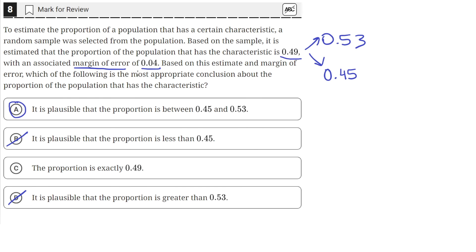It is plausible that the actual proportion is within this range of values, so C is also incorrect. So A is the answer.